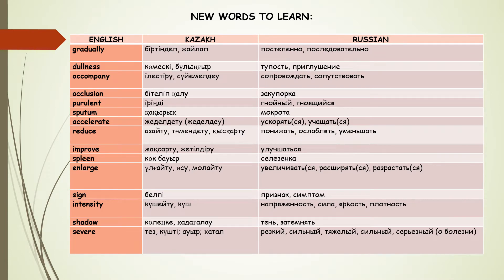Try to remember the new words gradually: dullness, accompany, occlusion, purulent sputum, accelerate, reduce, improve, spleen, enlarge, scion, intensity, shadow, severe.